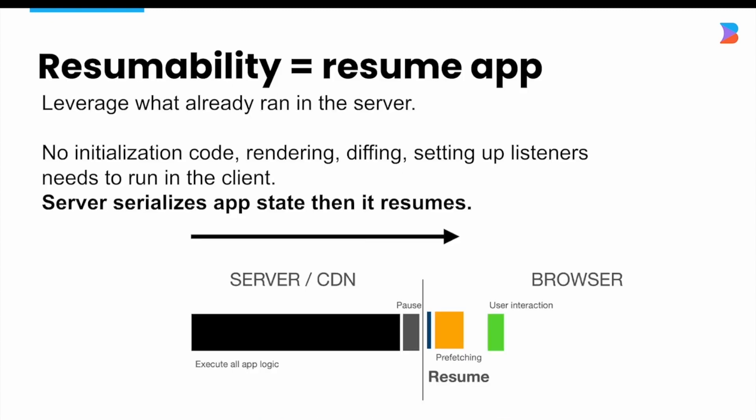This is where Quick uses resumability and not hydration. There's no initialization code, rendering, diffing, or setting up listeners just for it to run on the client — it picks up right where it left off.